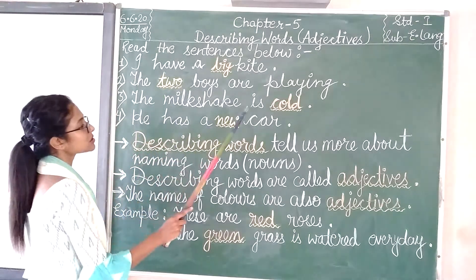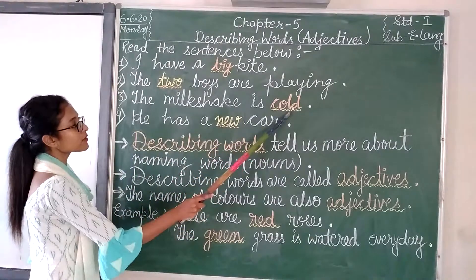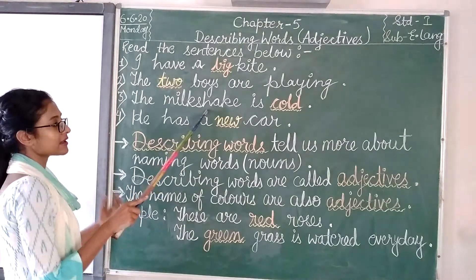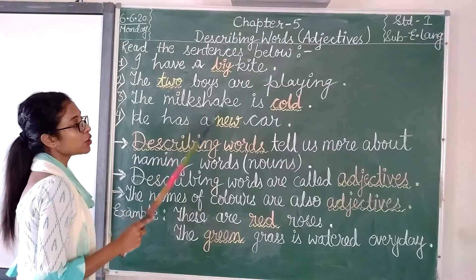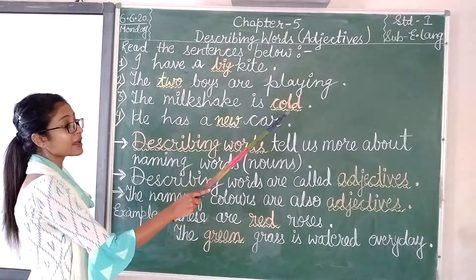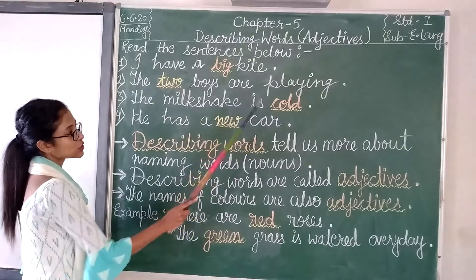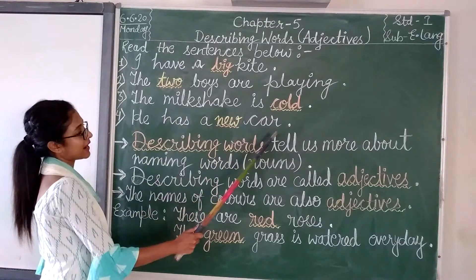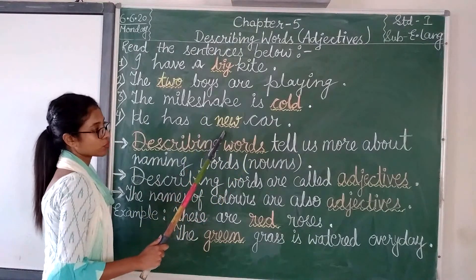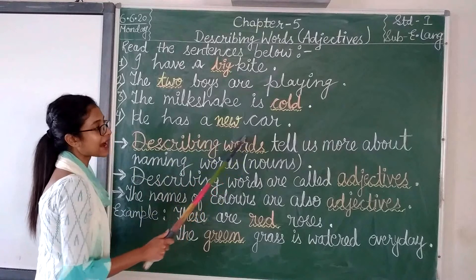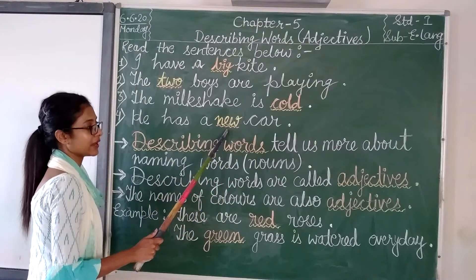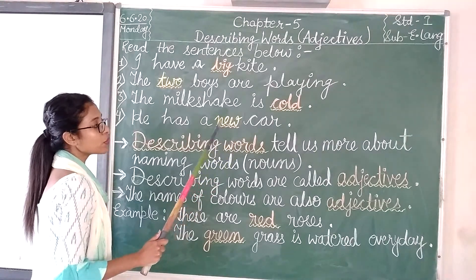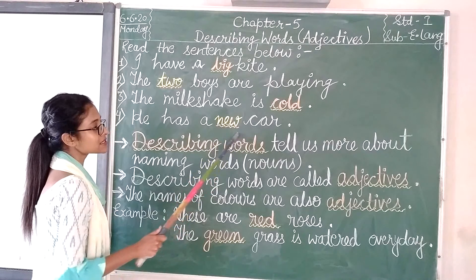In the next sentence, the milkshake is cold. The word 'cold' is describing about 'milkshake'. And then: He has a new car. Here the word 'new' is describing about 'car'. Car is a noun, so the word 'new' is the describing word for this noun.